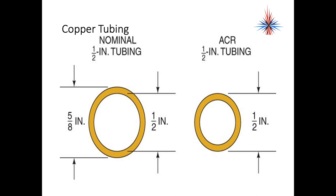If you look closely, five-eighths inches outside versus half inch inside—well, half inch is the same as four-eighths, so there's a one-eighth inch difference between the two sizes. That's for the wall of the pipe. So be very careful with tubing sizes when you're ordering. Nominal tubing is measured by inside diameter, ACR tubing by outside diameter.